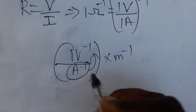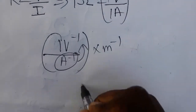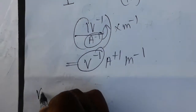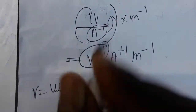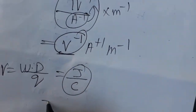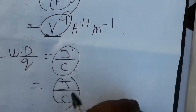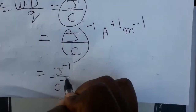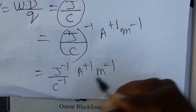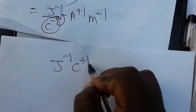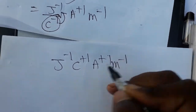So ohm inverse meter inverse gives us: ampere plus 1, meter minus 1, volt minus 1. Now we need to substitute for volt. Voltage is equal to work done by charge, so volt equals joules divided by coulombs. Instead of volt, we write joule per coulomb inverse, giving joule inverse, coulomb plus 1, ampere plus 1, meter minus 1.